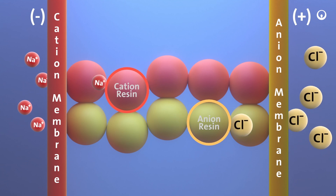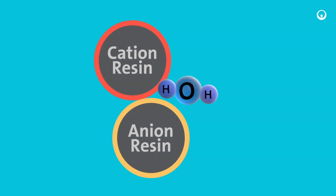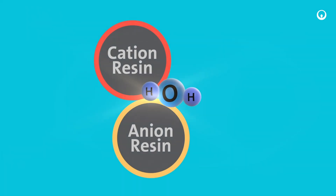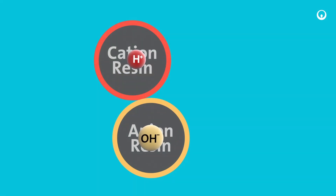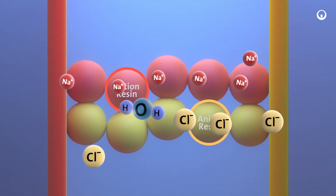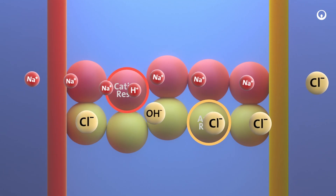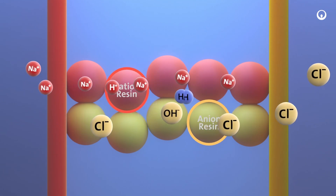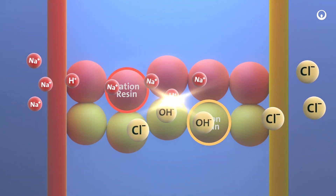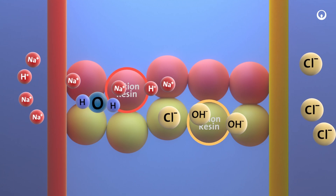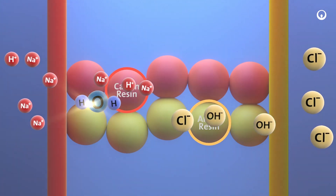The applied voltage drives a water-splitting reaction at the interface between the anion and the cation exchange material, which produces hydrogen ions and hydroxide ions. These ions continuously regenerate the ion exchange resin so that it can continue to remove impurities from the feed water.